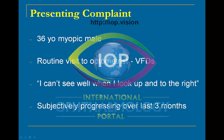I'm going to illustrate the case of complex glaucoma with this particular case of a 36-year-old moderately myopic male who was noticed to have bilateral visual field defects on a routine visit to his optometrist. He had gone to the optometrist complaining that he couldn't see very well when he looked up and to the right.